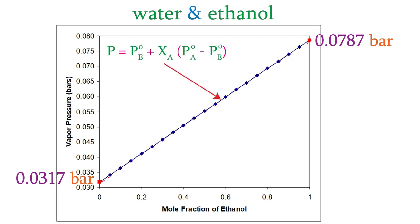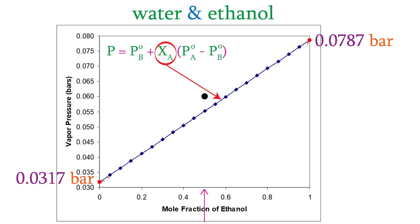Now let's plot our two equations. The first curve uses the mole fraction of ethanol in the liquid. Suppose we have a mole fraction of 0.5 for ethanol in the liquid. The curve tells us that the total vapor pressure above the liquid is 0.0552 bars. If we try to raise the vapor pressure to, say, 0.06 bars without changing the temperature or mole fraction, we find that it can't be done — all the vapor will immediately recondense into a liquid.